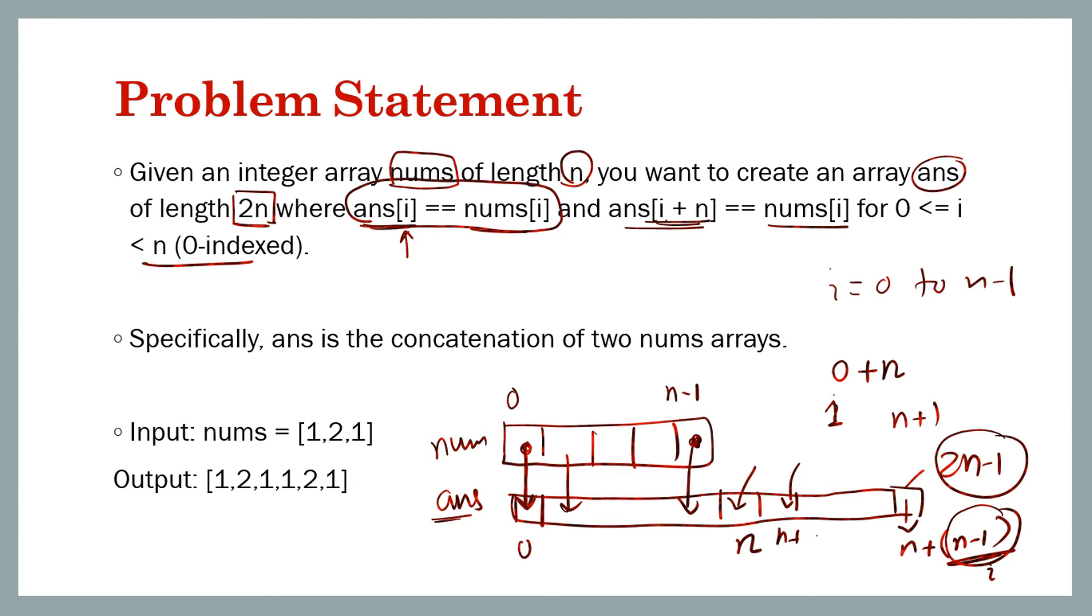When i is 1 we put this value at index 1 and n plus 1, and so on all the way up to here, so all the values occur twice.